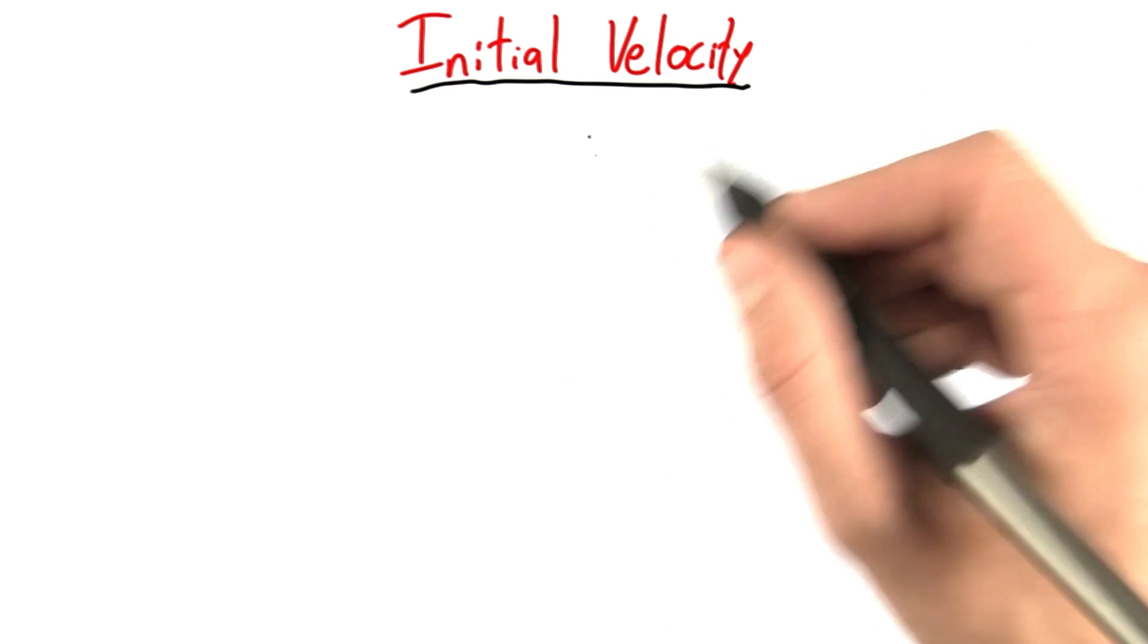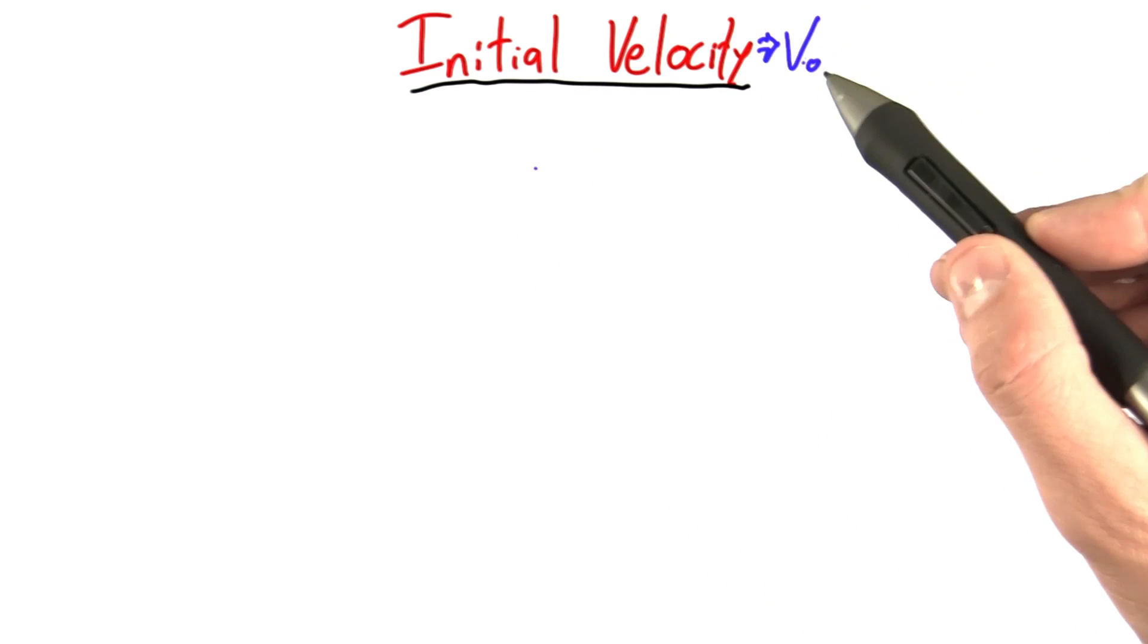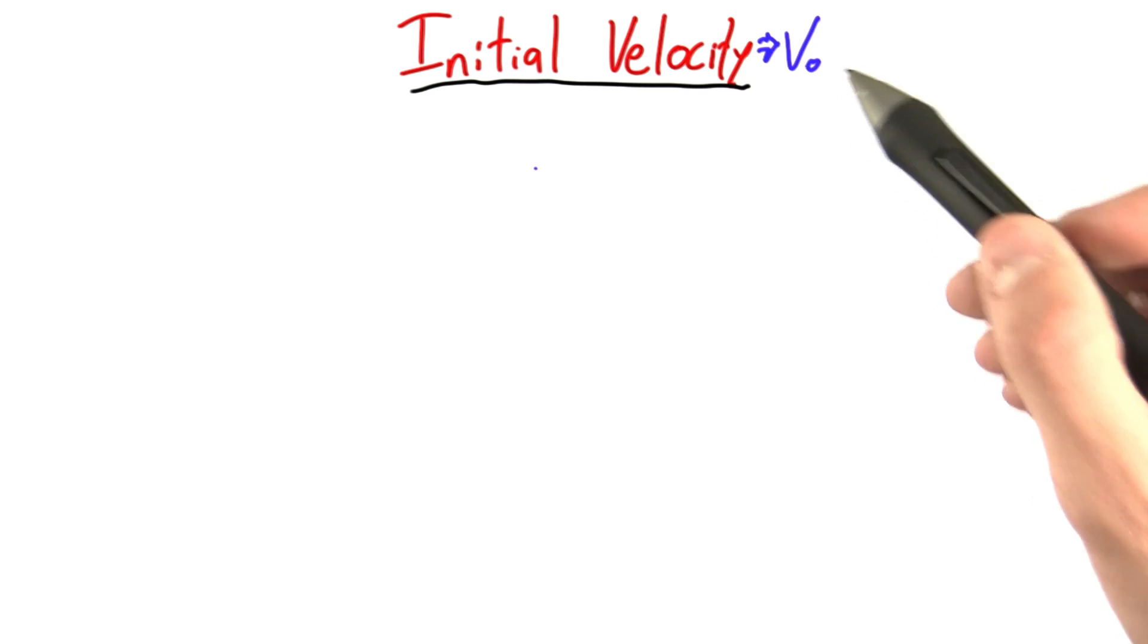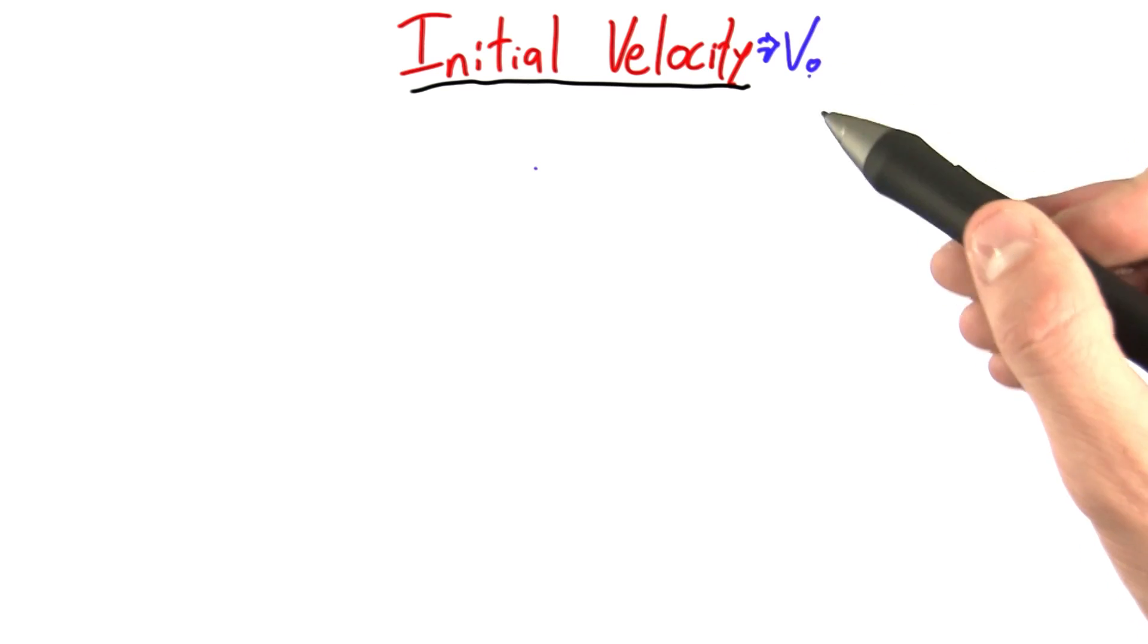For now, let's talk about this initial velocity idea. The variable we're going to use to talk about initial velocity is v with this subscript 0. This comes from the idea that when we start a problem, we usually start our timer at 0, and so this is at time equals 0. What is the velocity?